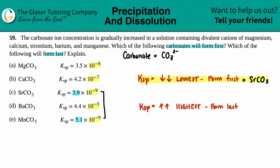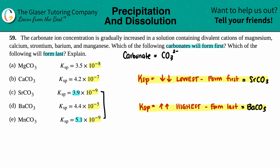For the one that forms last, we pick the highest value. Between exponents -8, -7, and -5, negative five is the highest, so the compound that forms last is BaCO₃. For the explanation: they all form the same number of ions, so we can just compare Ksp values directly — take highest to lowest.